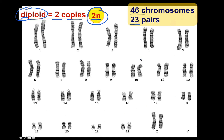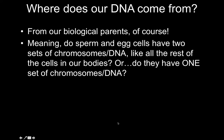Here's a picture of an individual's chromosomes — and obviously this would be a normal cell because you have two copies of each chromosome: two copies of chromosome one, two copies of chromosome two, and so on — two copies of chromosome nine, chromosome seventeen, twenty-one, et cetera. So where does our DNA come from? From our biological parents, of course.